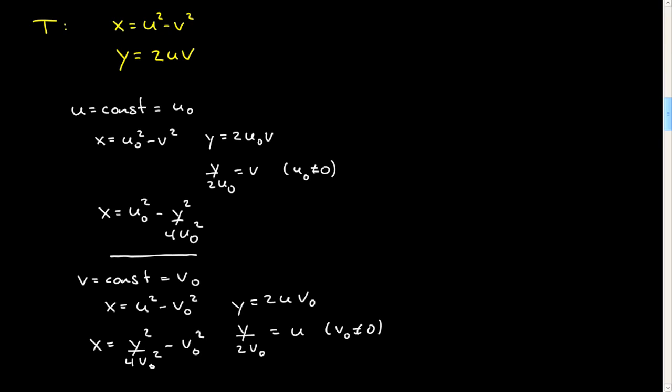All right, let me just go ahead and continue with the algebra and do these cases. If u naught is 0, let me just do it as a special case here. If u naught equals 0, then y is equal to 0, and x is equal to minus v squared. So x is equal to minus v squared, which will be less than or equal to 0 for any v, and y will be equal to 0.